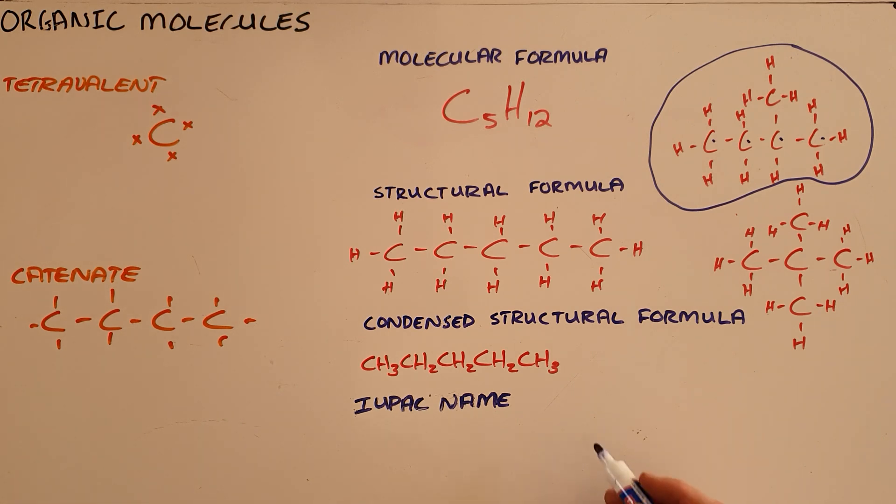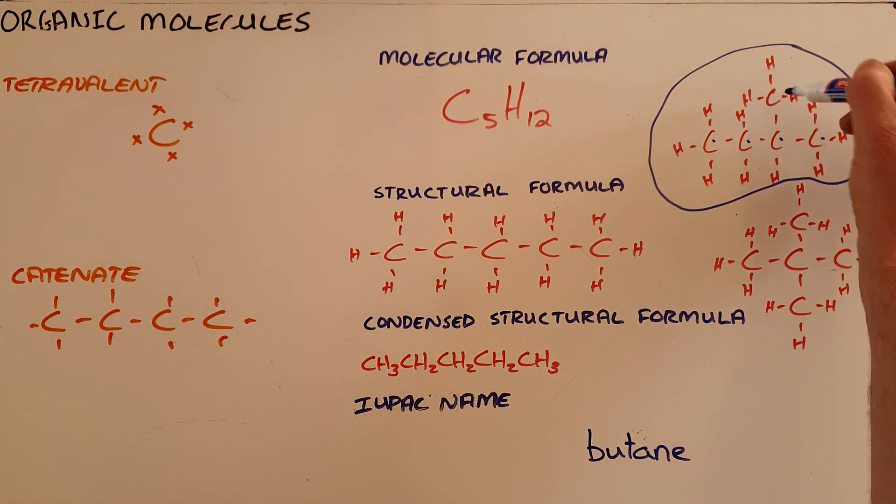This tells us it must get the prefix 'but.' We can also see there are only single bonds, which means it belongs to the homologous series called alkanes and as a result gets the suffix 'ane.' So this is butane.